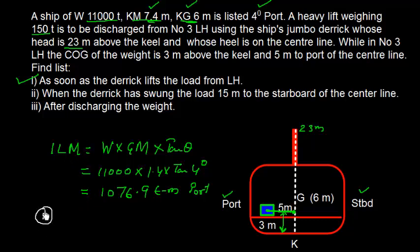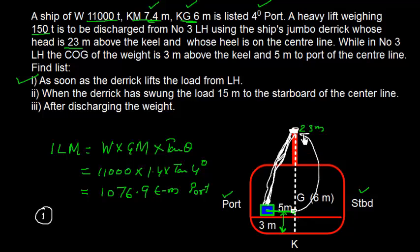As soon as the derrick picks up the load, the weight is virtually shifted to the derrick head location. The weight is shifted upward from its original position to the head. We calculate GG1 using the formula: GG1 = W × D / WF, where W is the weight shifted and D is the distance shifted between initial and final KG positions.